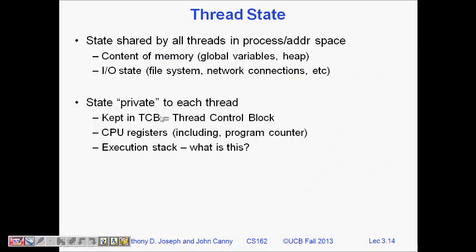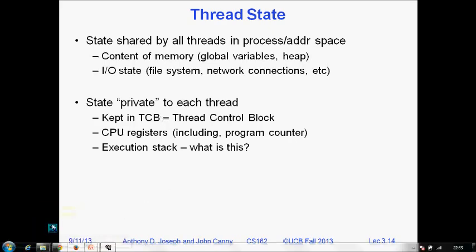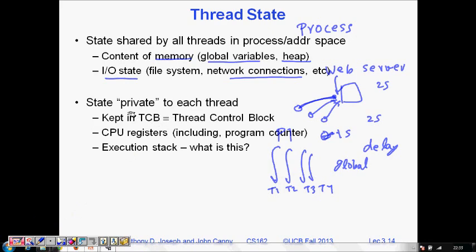Now what is private to each thread? What is private is kept in thread control block. CPU registers, program counter, stack counter—they will be different. Each thread will be executing parallelly, so their CPU registers, program counter, stack pointer will be different. One thread will be executing some different code than other thread.